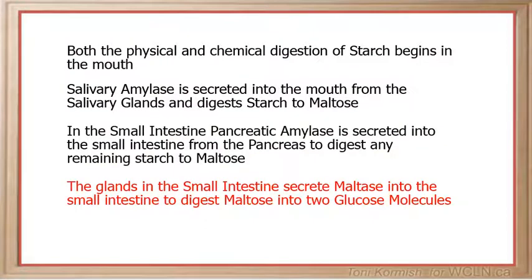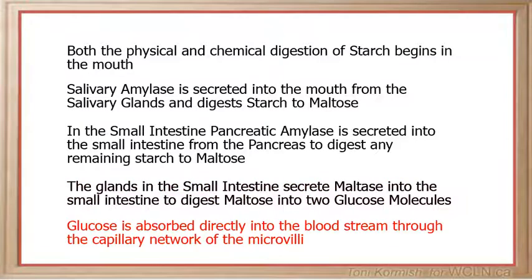The glands in the small intestine then secrete the enzyme maltase into the small intestine, digesting maltose into two glucose molecules. Finally, the glucose is absorbed directly into the bloodstream through the capillary network of the microvilli in the small intestine.